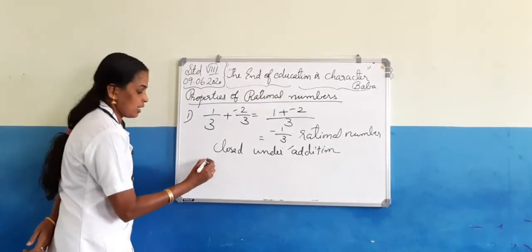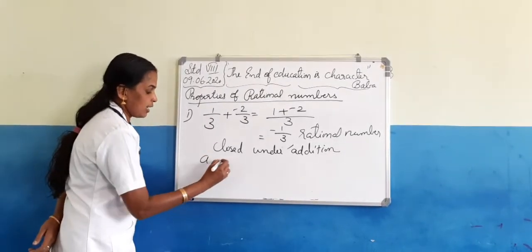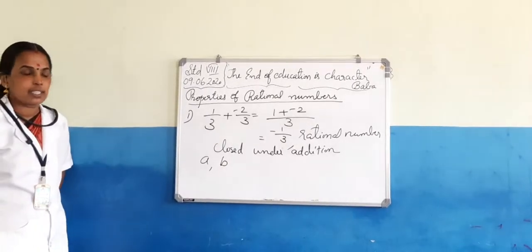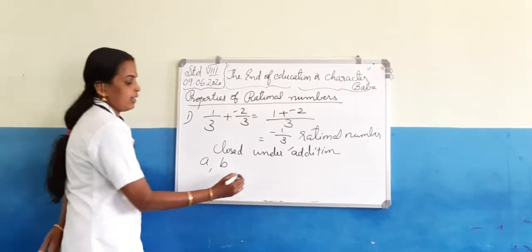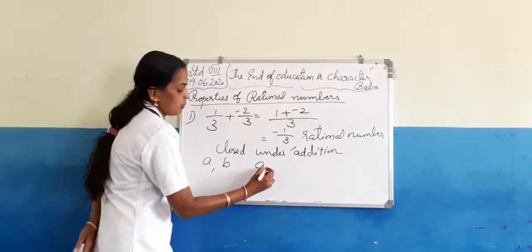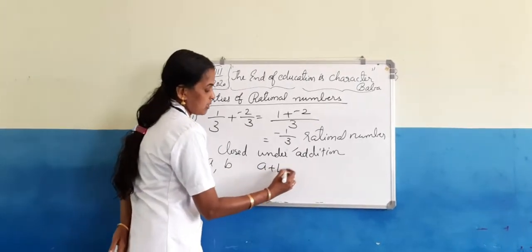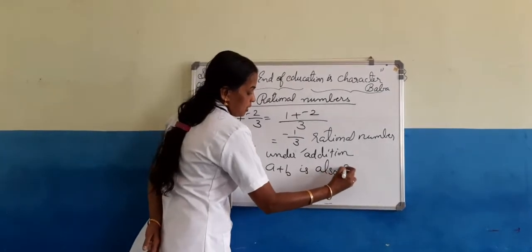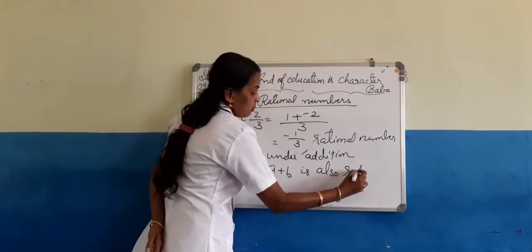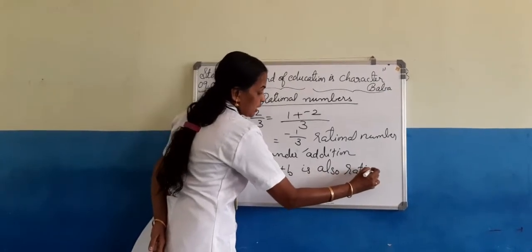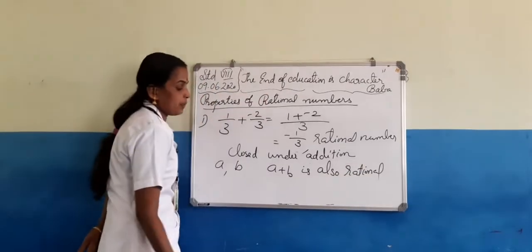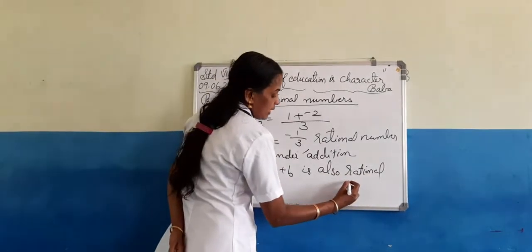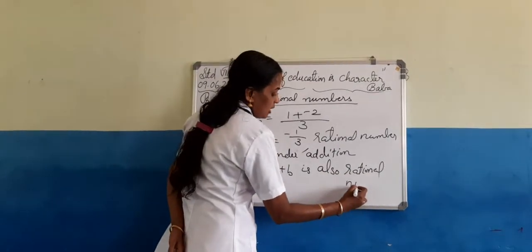Suppose A and B are two rational numbers, then A plus B is also a rational number. If A and B are two rational numbers, then A plus B is also a rational number.